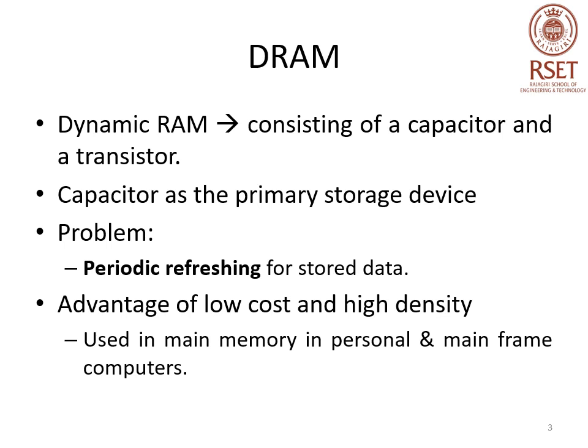Therefore, the cell data must be read or rewritten periodically, even when the memory arrays are not being accessed. In SRAM, a latch is used and the cell data is kept as long as power is turned on. The main advantage of DRAM is low cost and high density. DRAM is mainly used in main memory of personal and mainframe computers, whereas static RAM is mainly used as cache memory in microprocessors and mainframe computers.